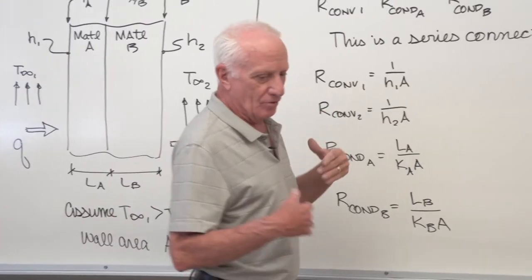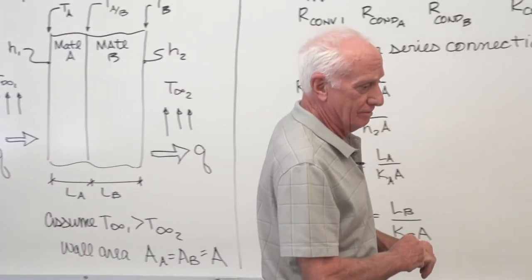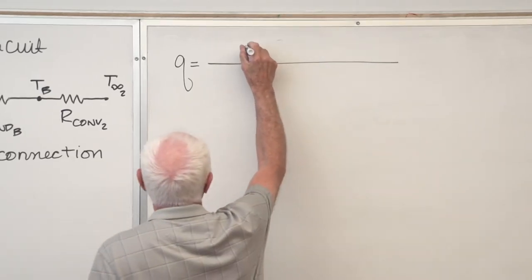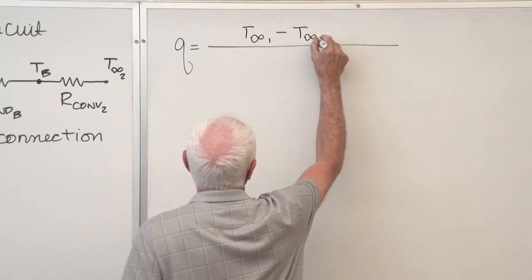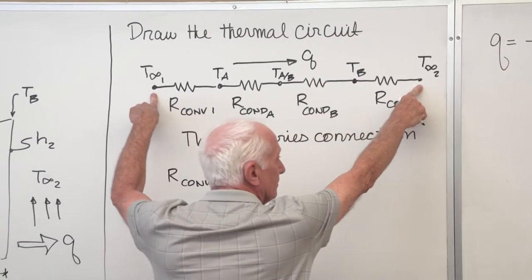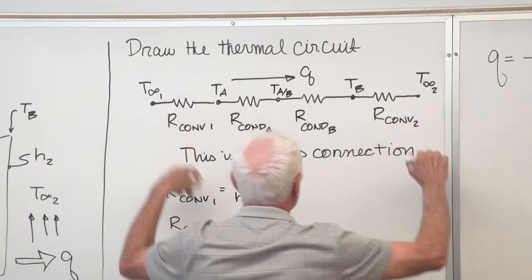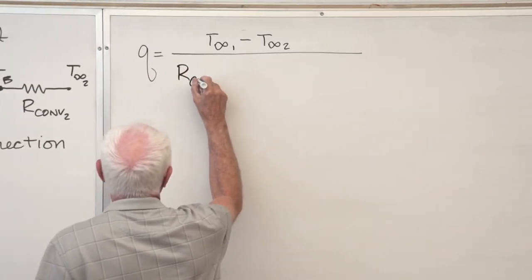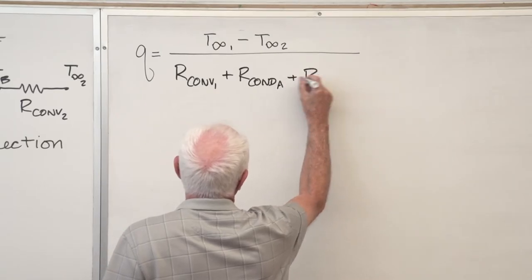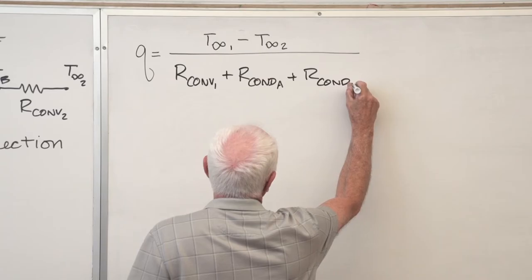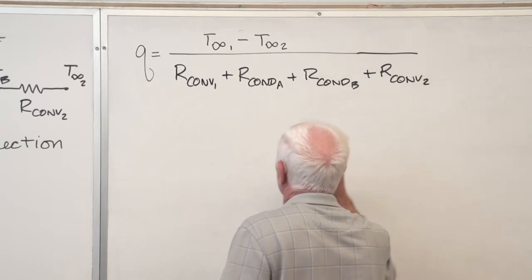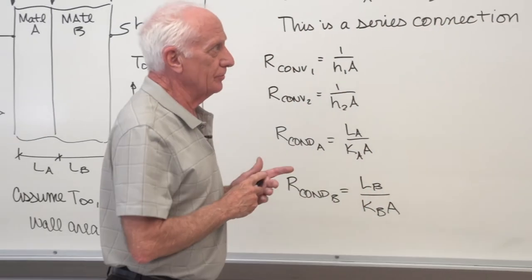The object is to find Q, the heat transfer. Q equals the hot temperature T∞1 minus the cold temperature T∞2, divided by the sum of the resistances: R convection 1 plus R conduction A plus R conduction B plus R convection 2. That gives Q in watts — the heat flow through the composite wall.